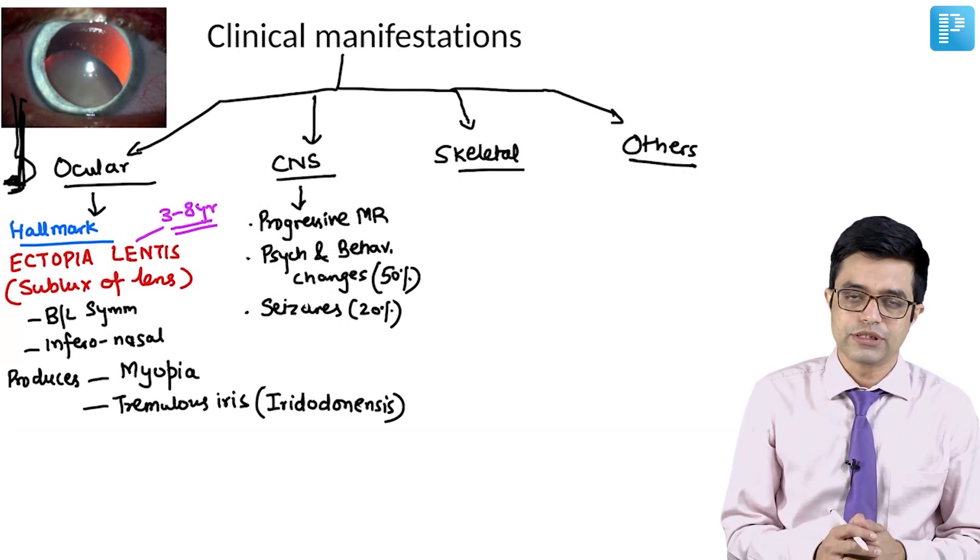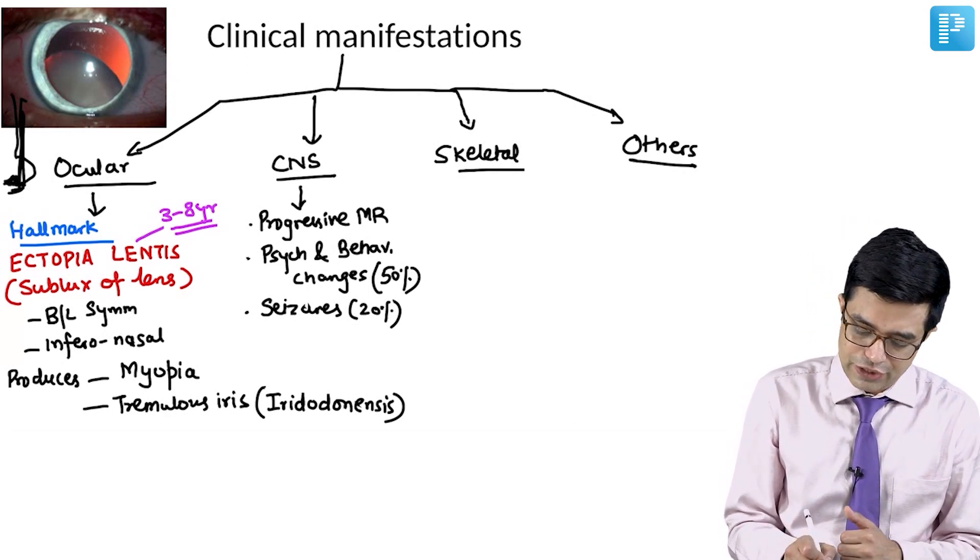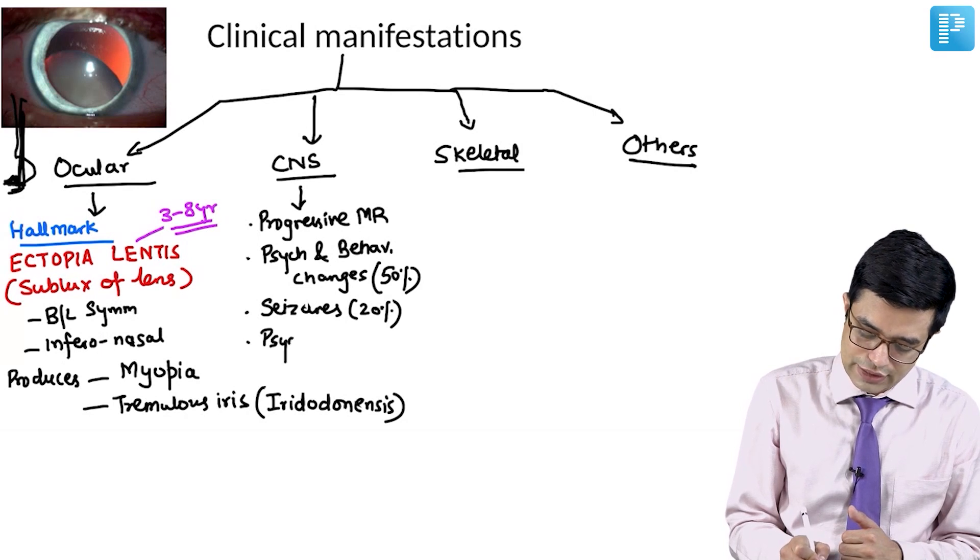But peripheral neuropathy features are not that predominant. It is the central nervous system which is mainly involved. Very rare features may include psychosis as well.